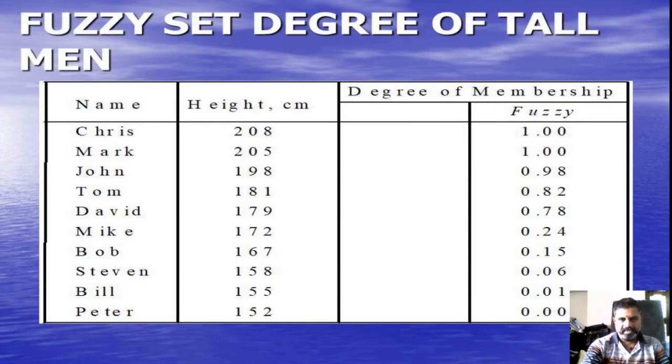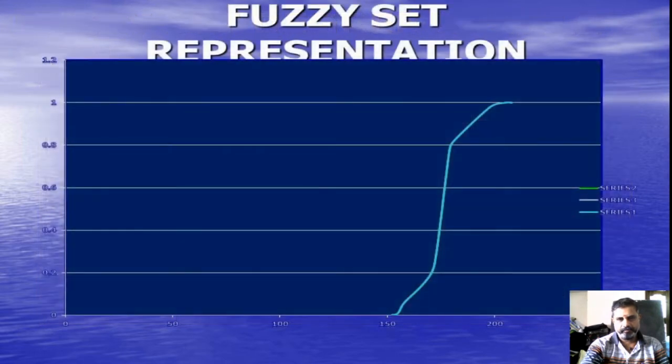Next, Fuzzy Set degree of tall. Starting with 0 at 208 centimeters, we finish with 1. So slowly we increase and reach the value 1. This is the Fuzzy Set representation. Fuzzy Set representation is a smooth curve.